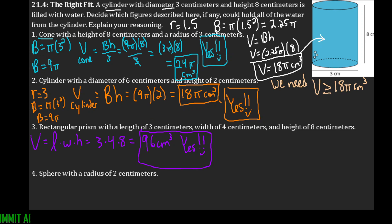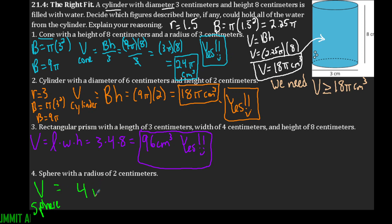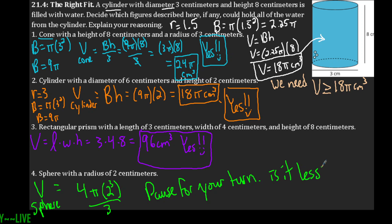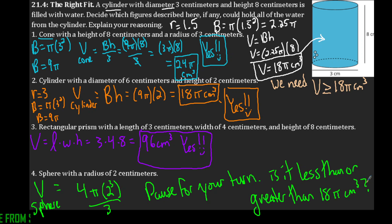Number four: a sphere with radius 2 centimeters. The volume formula gives four times pi times 2 cubed divided by three. Pause here for your turn — determine whether the volume is less than or greater than 18 pi cubic centimeters and decide if it can hold the water.